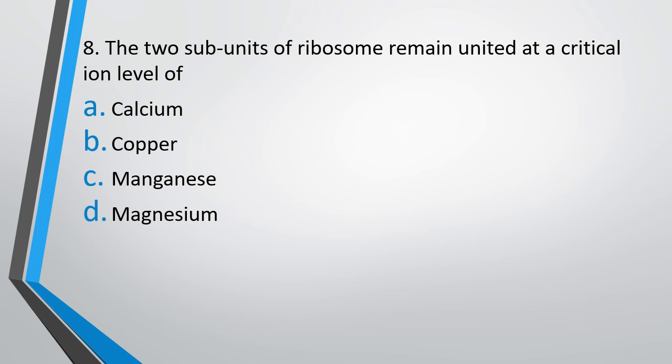Question number 8. The two subunits of ribosomes remain united at a critical ion level of: calcium, copper, manganese, or magnesium? The correct answer is option D — magnesium ions.